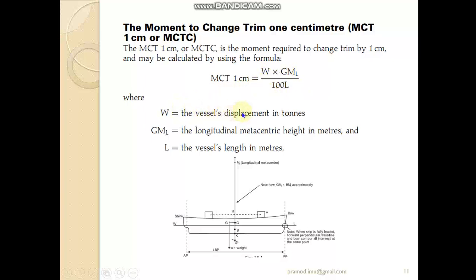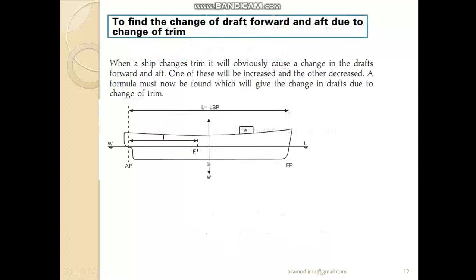The formula for MCTC is: W × GML divided by (100 × L), where W is the vessel's displacement in tons, GML is the longitudinal metacentric height — the distance between the center of gravity G and the longitudinal metacenter ML — and L is the vessel's length in meters. This equation applies to a ship at one particular draft.